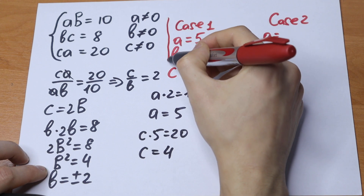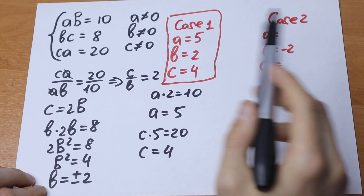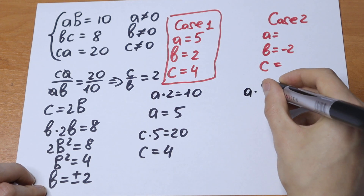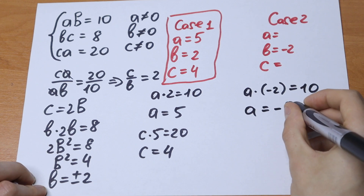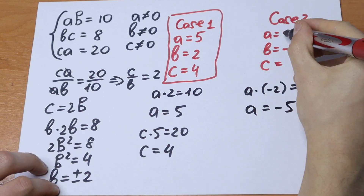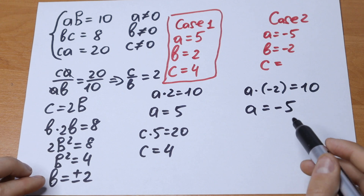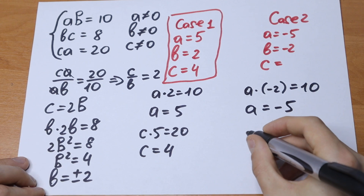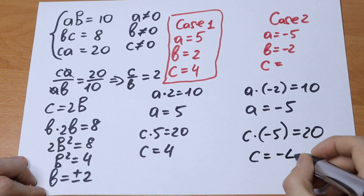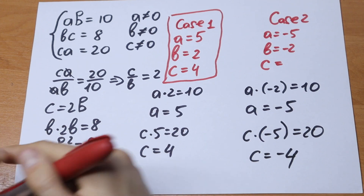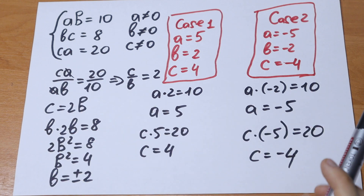So we have the first case solution. Now let's calculate the second case. We know that B equals minus 2. We can calculate A: A times minus 2 equals 10, so A equals minus 5. For C, using the third equation: C times minus 5 equals 20, so C equals minus 4. This is our second pair of solutions to this interesting system of equations.